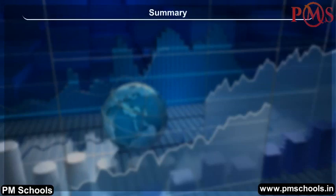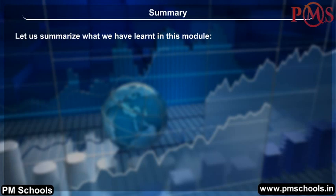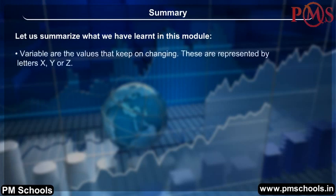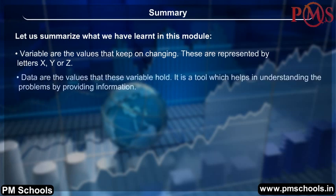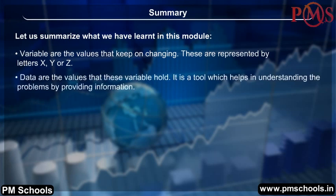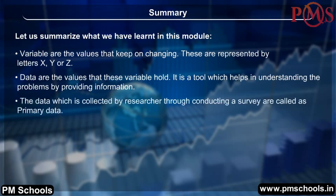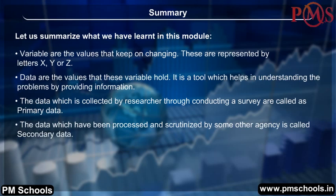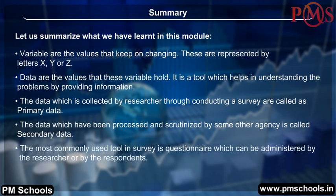Summary: Variables are the values that keep on changing, represented by letters X, Y, or Z. Data are the values that these variables hold — a tool which helps in understanding problems by providing information. The data collected by a researcher through conducting a survey is called primary data. Data which has been processed and scrutinized by some other agency is called secondary data. The most commonly used tool in a survey is a questionnaire, which can be administered by the researcher or by respondents.